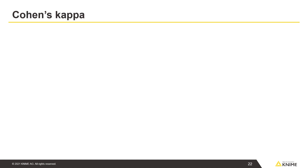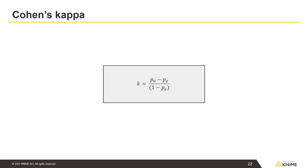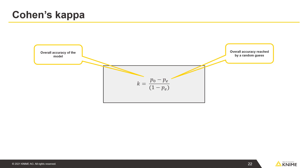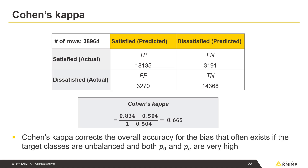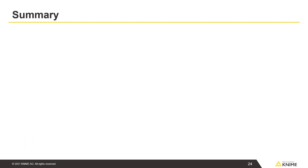Cohen's kappa is calculated with this formula. P0 is the overall accuracy of the model, and Pe is the overall accuracy reached by a random guess. Cohen's kappa corrects the overall accuracy for the bias that often exists if the target classes are unbalanced and both P0 and Pe are very high.